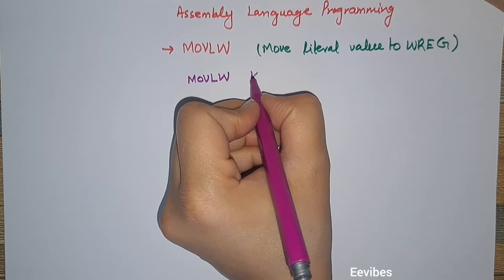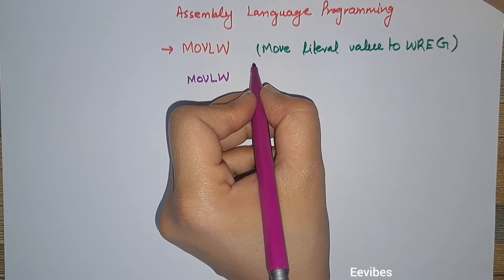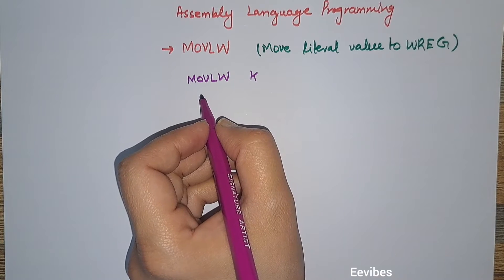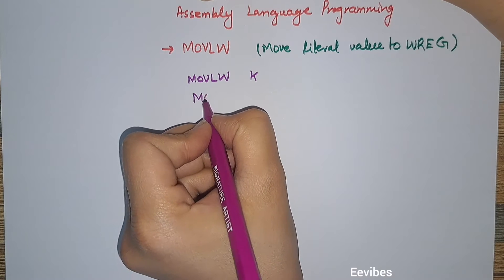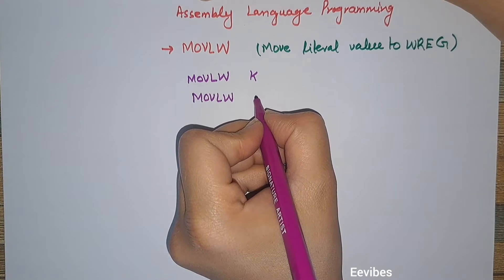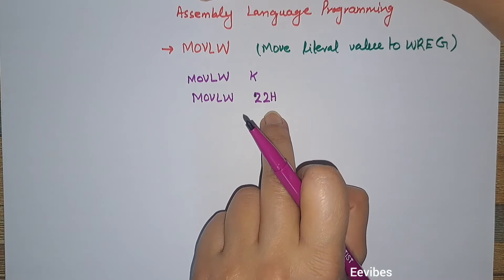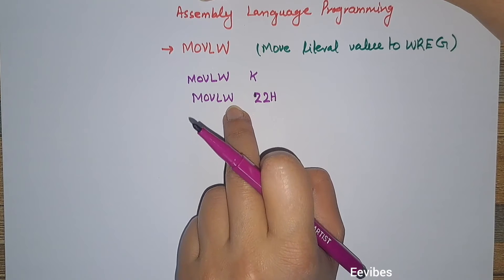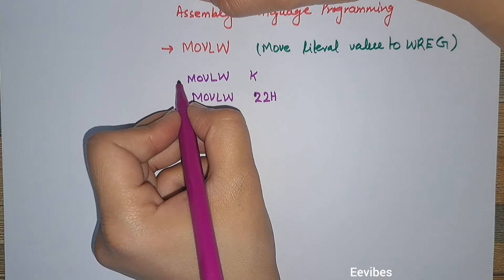The syntax for this instruction is Move Literal Value to W, where you write the literal value k. This k can be in hex, decimal, or as a character. For example, if you write 22 hex, it means 22 hex will be stored in the W register.